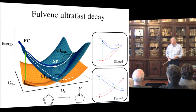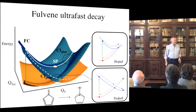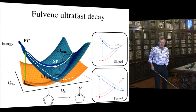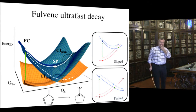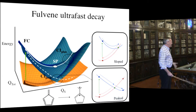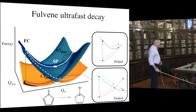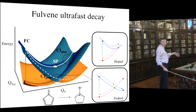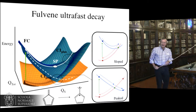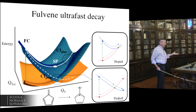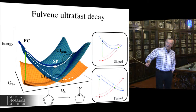For a benchmark-type computation, fulvene has become a benchmark in this field. It's been treated in a variety of ways with quantum dynamics and with trajectories, and has most of the features of an ideal photochemical system. As far as I know, you can't come anywhere near it experimentally — which also has its advantages, so we only have to worry about other theoreticians.